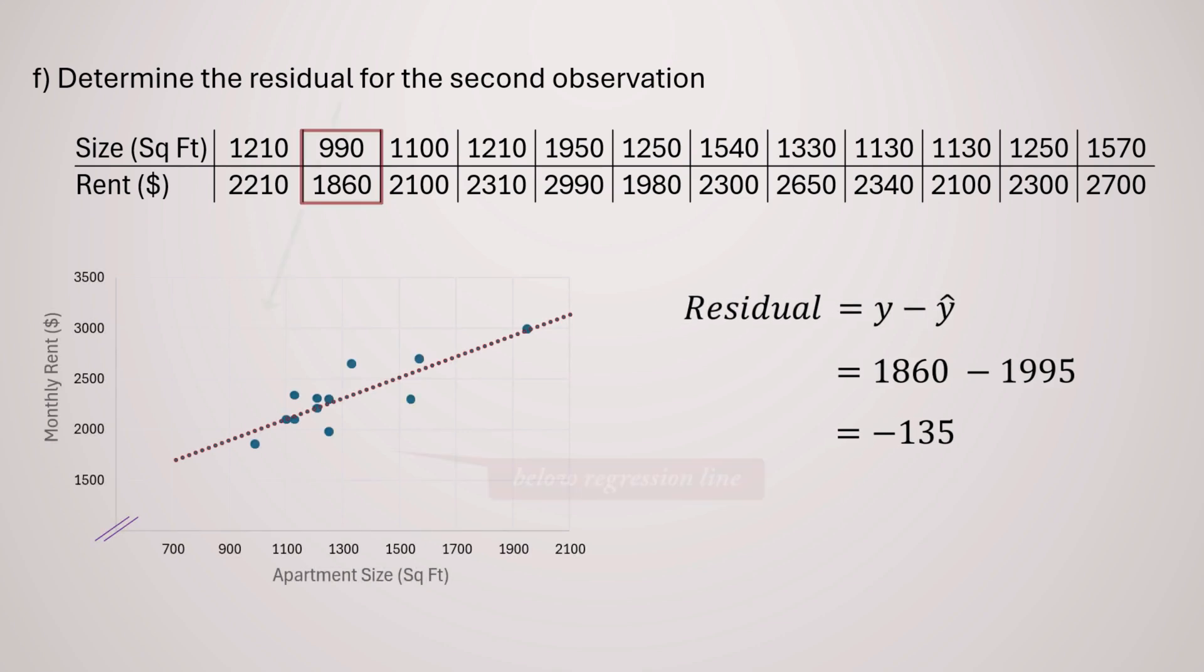This negative residual tells us that our model overestimated the rent for this particular data point. If you look at the graph, you'll notice that this point falls below the regression line, which visually confirms our residual calculation.